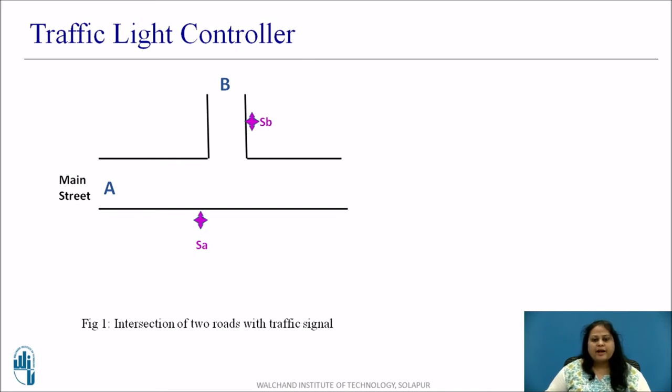Each street has traffic sensors which detect the presence of vehicles approaching or stopped at the intersection. SA equal to 1 means a vehicle is approaching on street A and SB equal to 1 means a vehicle is approaching on B. Both street A and B has traffic light signal. As street A is a main street it has a green light on until a vehicle approaches on street B.